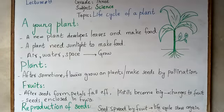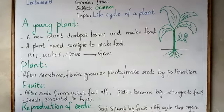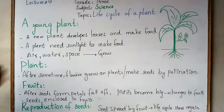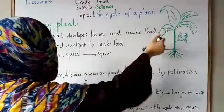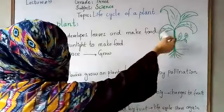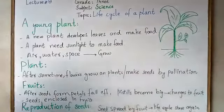Now we will see how a seedling converts to a young plant. In the seedling stage, the plant develops leaves, branches, stem, and roots. The young plant has now developed leaves and makes food with the help of leaves, so the plant needs sunlight to make food. These are the leaves through which it will make food.